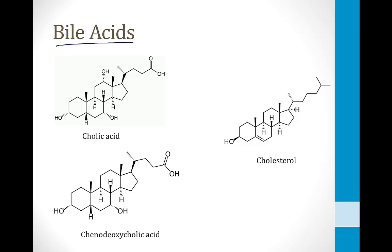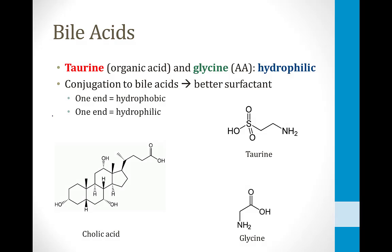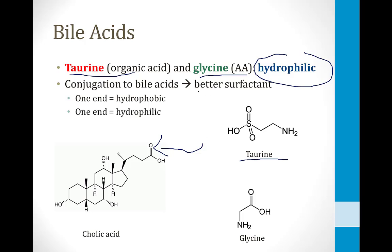Bile salts are synthesized from bile acids. Two of the most common bile acids in the human body are cholic acid and chenodeoxycholic acid — I've shown their structures on the screen here. I've also shown the structure of cholesterol so you can see that these bile acids are very similar in structure to cholesterol, which can help remind you that these structures are synthesized from cholesterol in the liver. To make bile acids into better surfactants, they are conjugated to other structures, meaning another structure is added to the molecule to create a hydrophilic end.